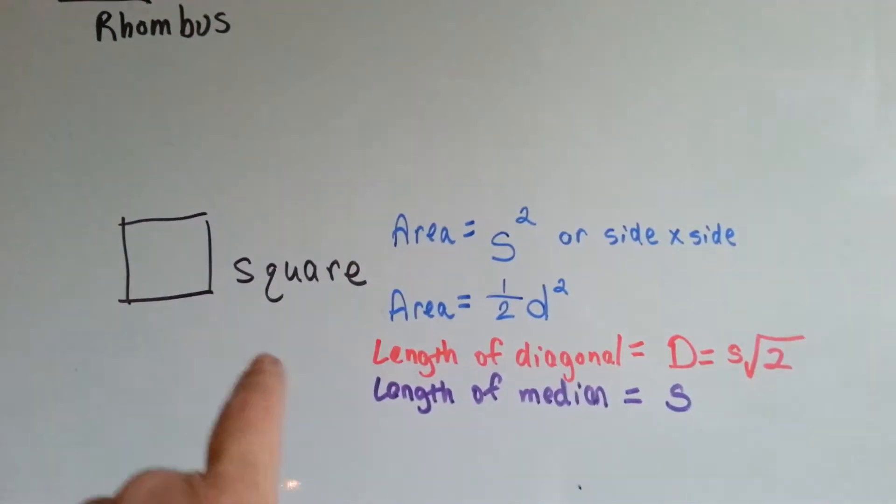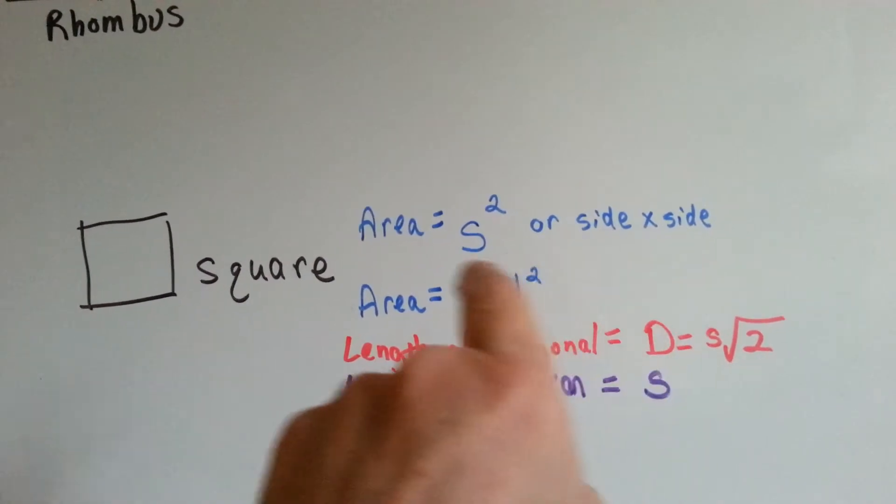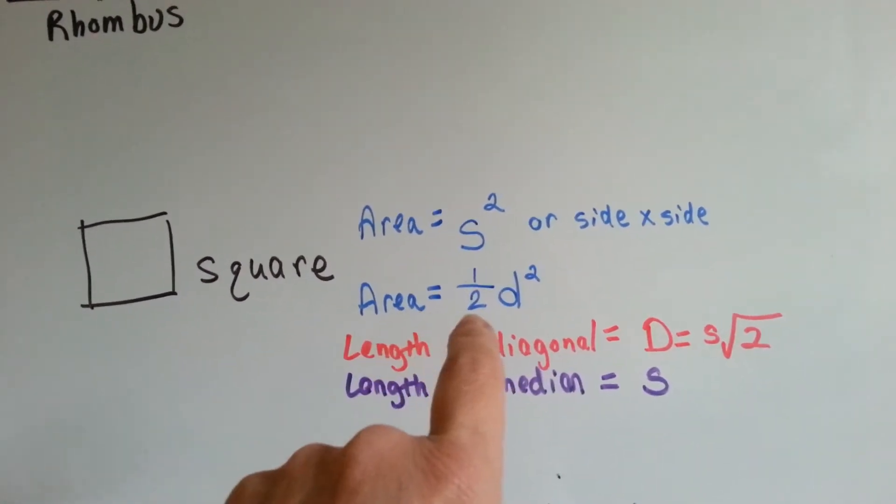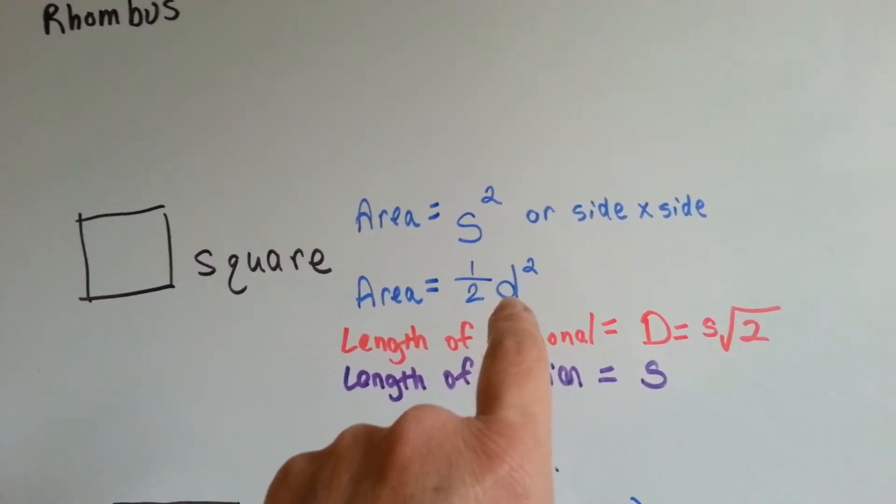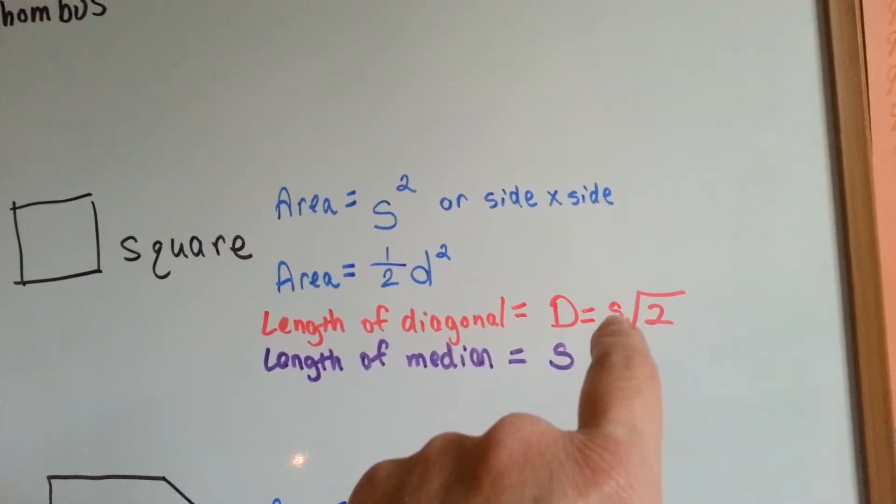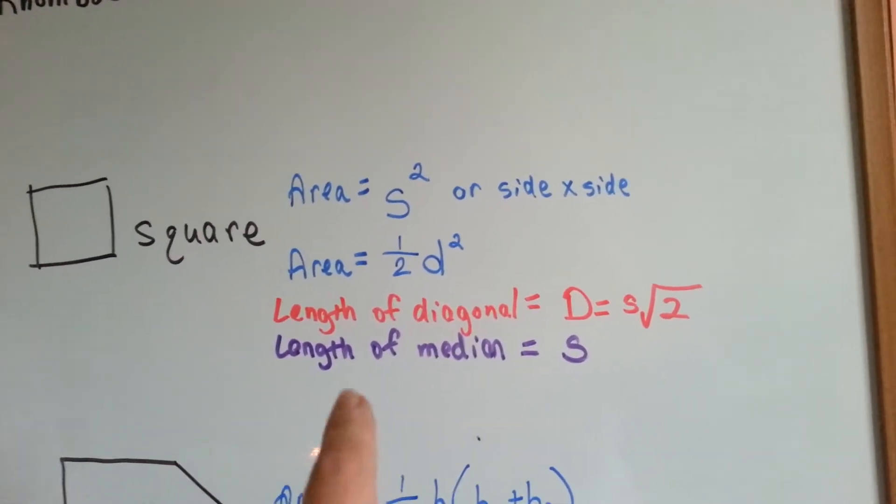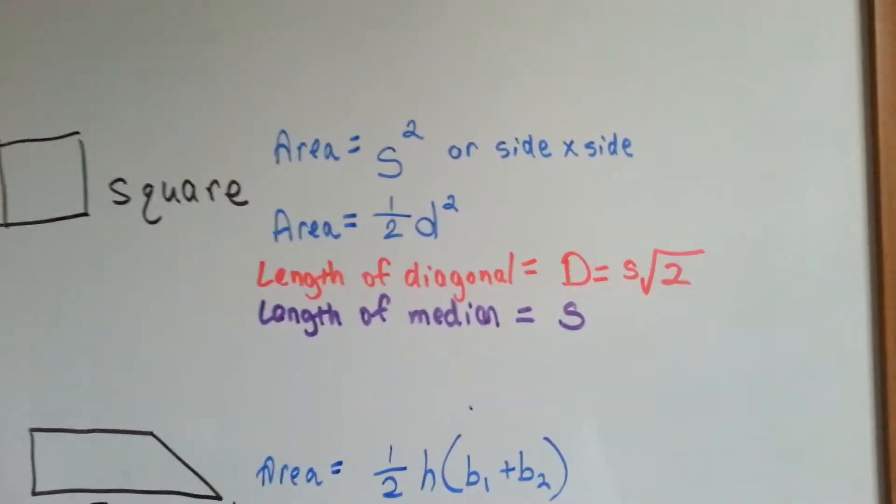For the square shape, area is side times side, or side squared. You can also say it's half the diagonal squared. The length of the diagonal is the length of a side times the square root of 2. The length of the median is the length of the side.